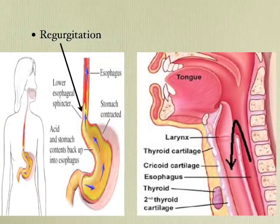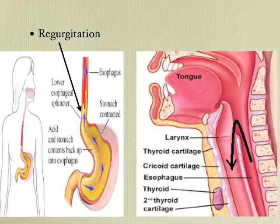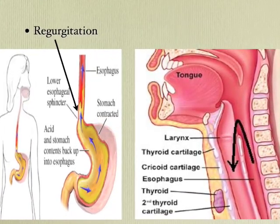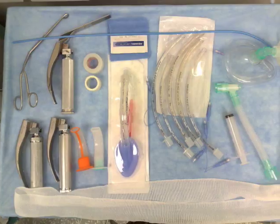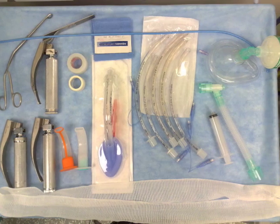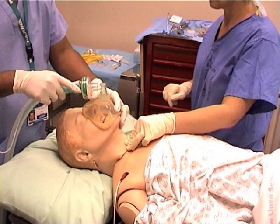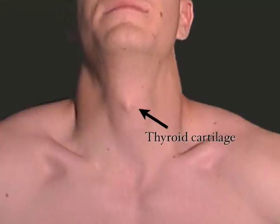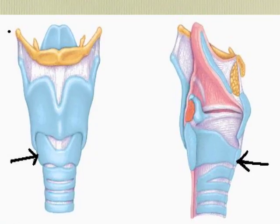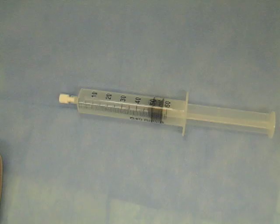To conclude, rapid sequence induction is done to reduce the risk of gastric aspiration. In this video, we saw how to prepare and perform a rapid sequence induction. We also demonstrated how to identify the cricoid cartilage and practice safe application of cricoid pressure. Thank you for watching.